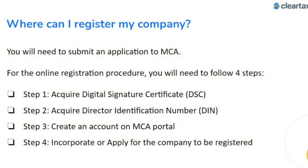When can I register my company? You will need to submit an application to the Ministry of Corporate Affairs, which is MCA. For the online registration procedure, you will need to follow four steps: step one, acquire a Digital Signature Certificate; step two, acquire a Director Identification Number; step three, create an account on the MCA portal; step four, incorporate or apply for the company to be registered.